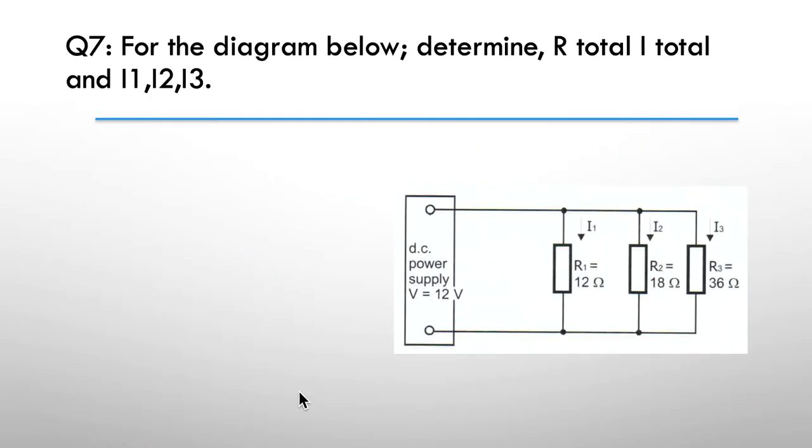Question 7, for the diagram below, determine R total and I total and the current in I1, I2, and I3. So determine R total, I total, I1, I2, and I3. We've got a 12 volt supply, R1 is 12 ohms, R2 is 18, R3 is 36. So you pause here while you do your calcs.